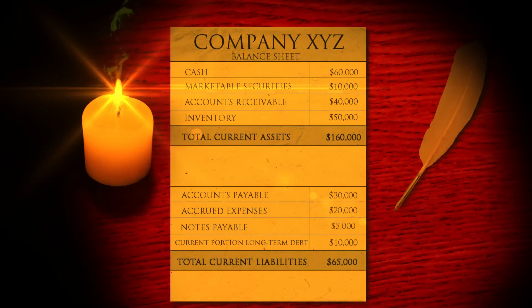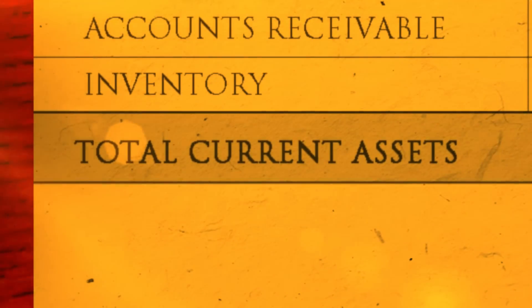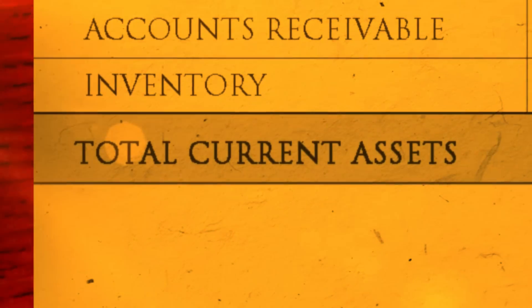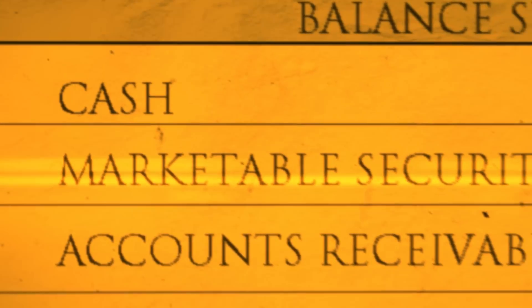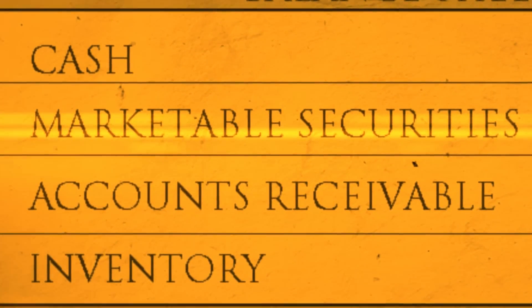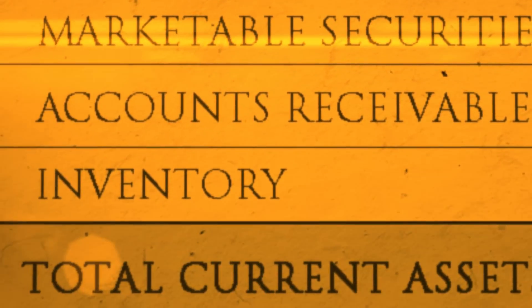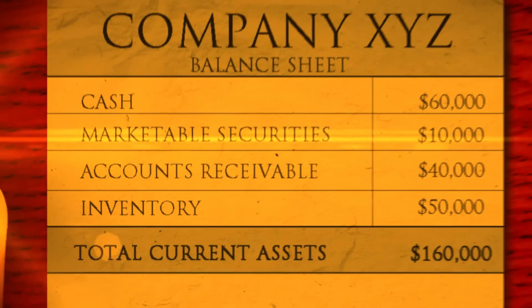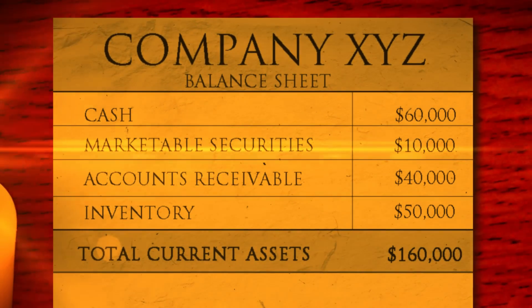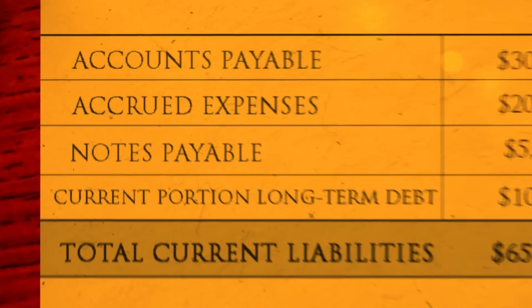In order to calculate total current assets, you must first calculate the total amount of cash, marketable securities, accounts receivable, and inventory you currently have. In order to calculate total current liabilities, you must calculate the total amount of accounts payable, accrued expenses, notes payable, and current portion of long-term debt.